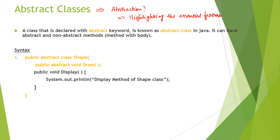A class that is declared with the abstract keyword is known as an abstract class in Java. It can have both abstract and non-abstract methods. Abstract methods are methods which do not include any implementation, while non-abstract methods — also called concrete methods — do have a body and implementation.